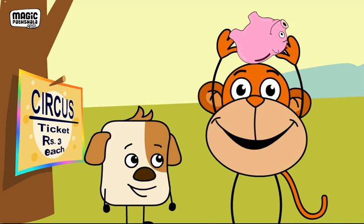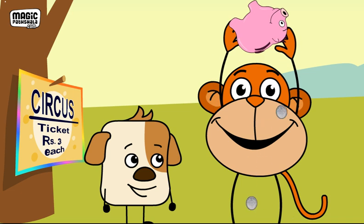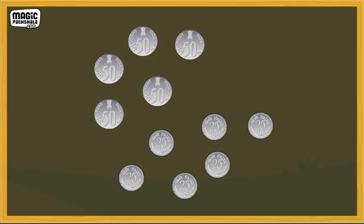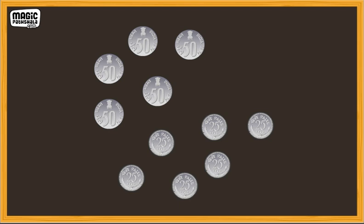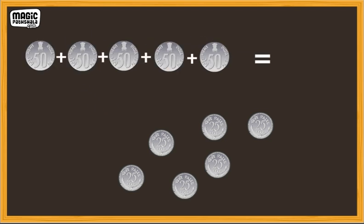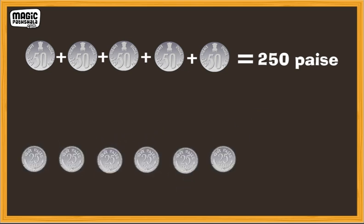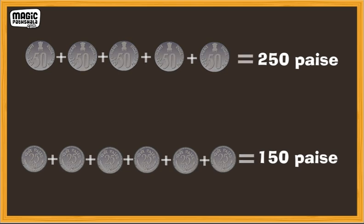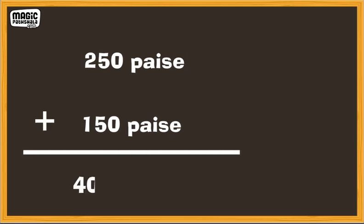Jojo says he has some money in his bank. Let's count Jojo's money. Jojo has 5 coins of 50 paise, which is equal to 250 paise, and 6 coins of 25 paise, which is equal to 150 paise. In total, Jojo has 400 paise or Rs. 4.